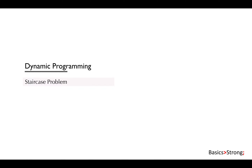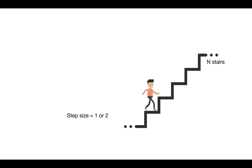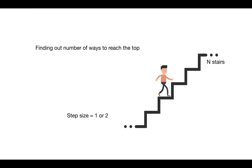Welcome back. We have discussed a lot about dynamic programming. Now let's start working on some problems. In this lecture we're going to solve the staircase problem with dynamic programming. You are given n stairs and a step size — for example, step size can be one or two, meaning you can take one step or two steps at a time. The objective is to find the total number of ways to reach the top stair.